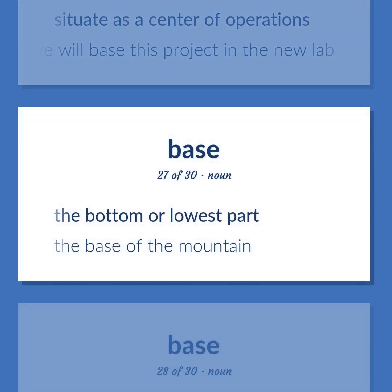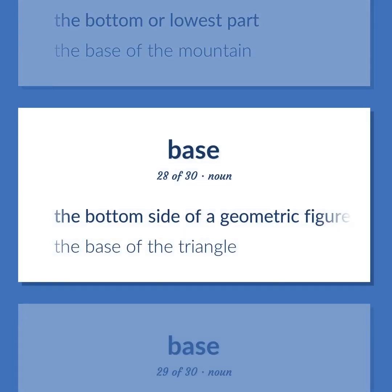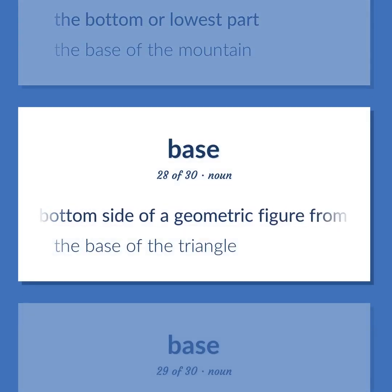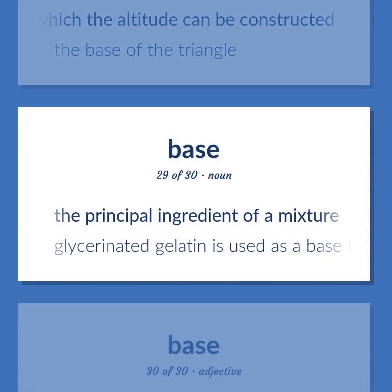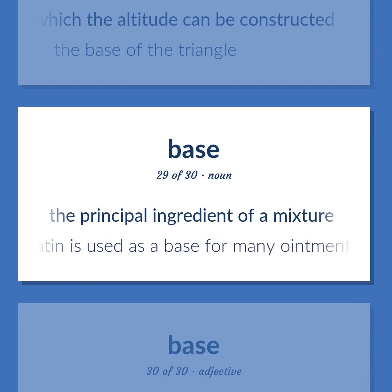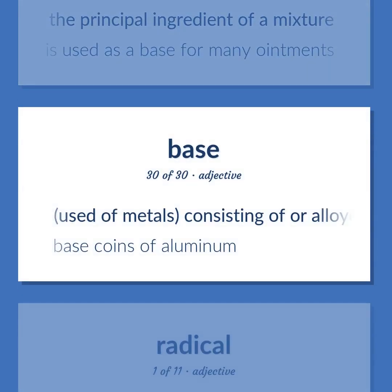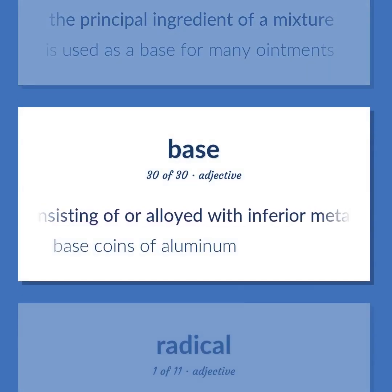The bottom or lowest part. The base of the mountain. The bottom side of a geometric figure from which the altitude can be constructed. The base of the triangle. The principal ingredient of the mixture. Glycerinated gelatin is used as a base for many ointments. Used of metals: consisting of or alloyed with inferior metal. Base coins of aluminum.